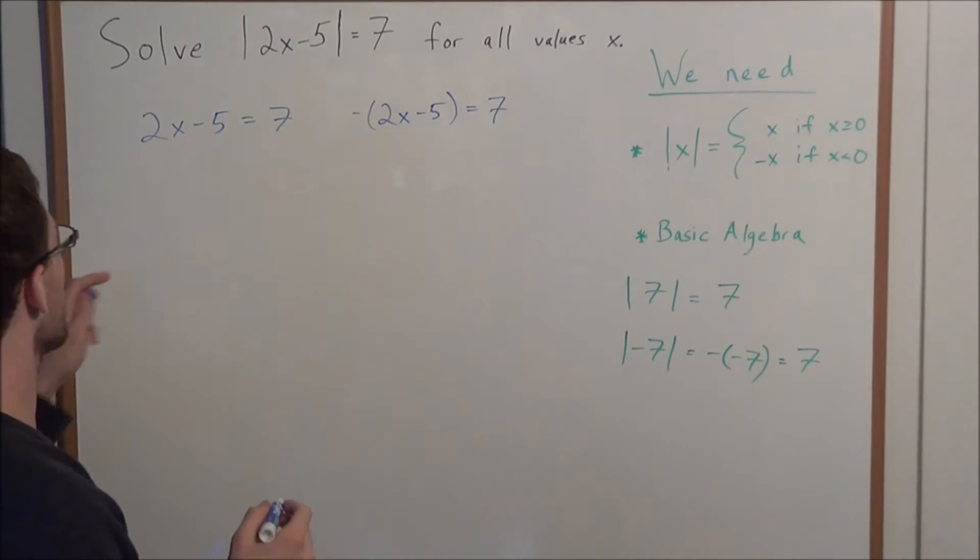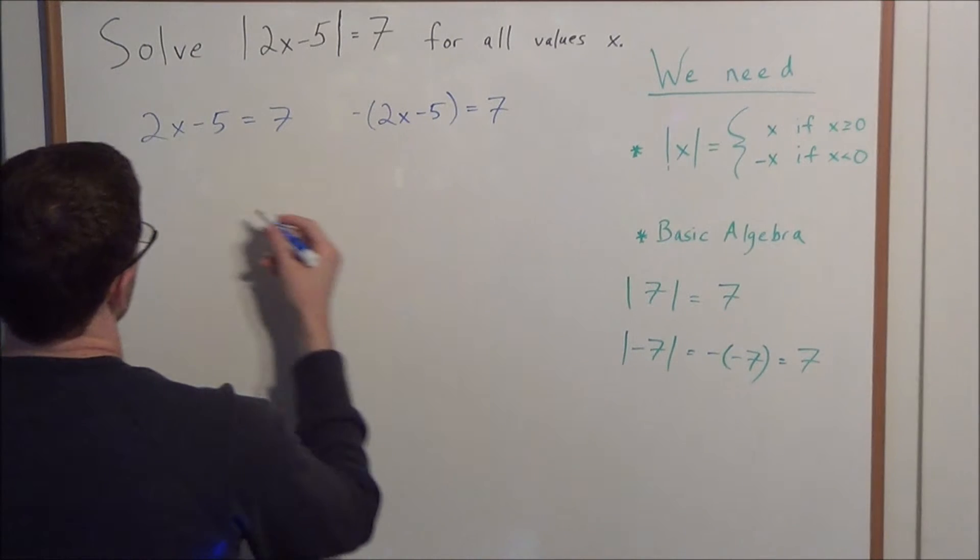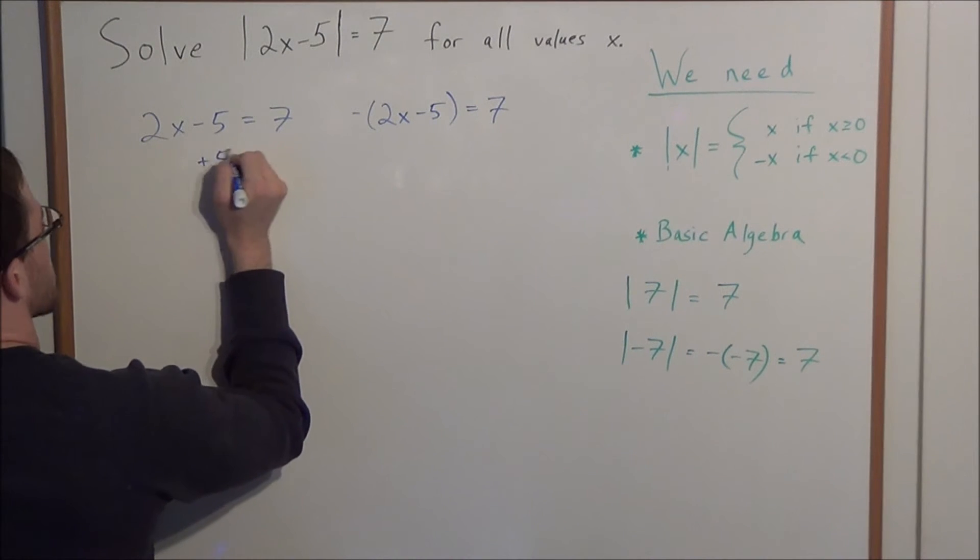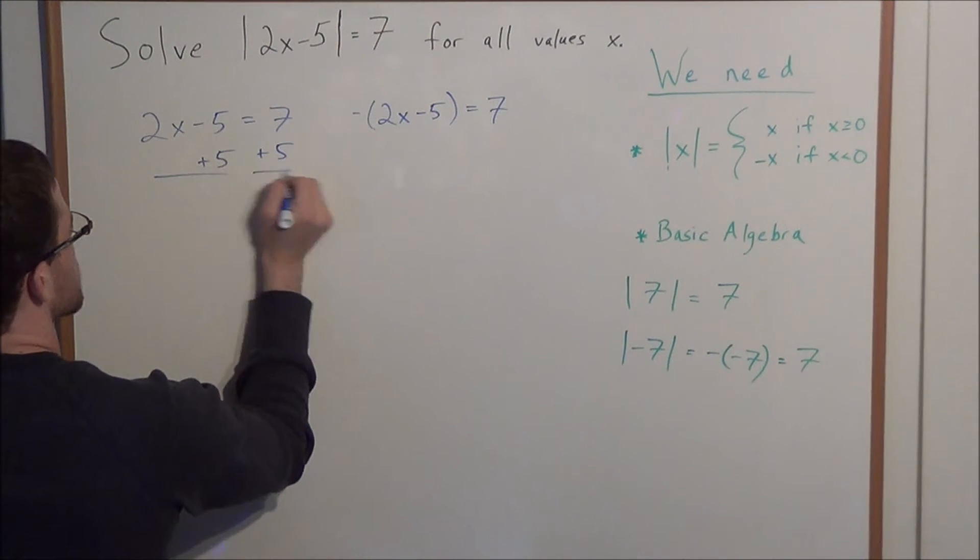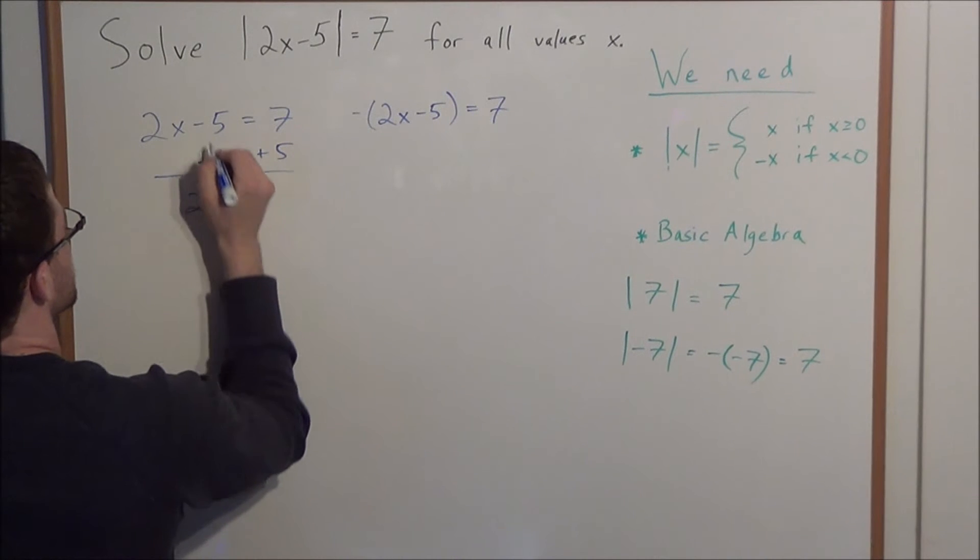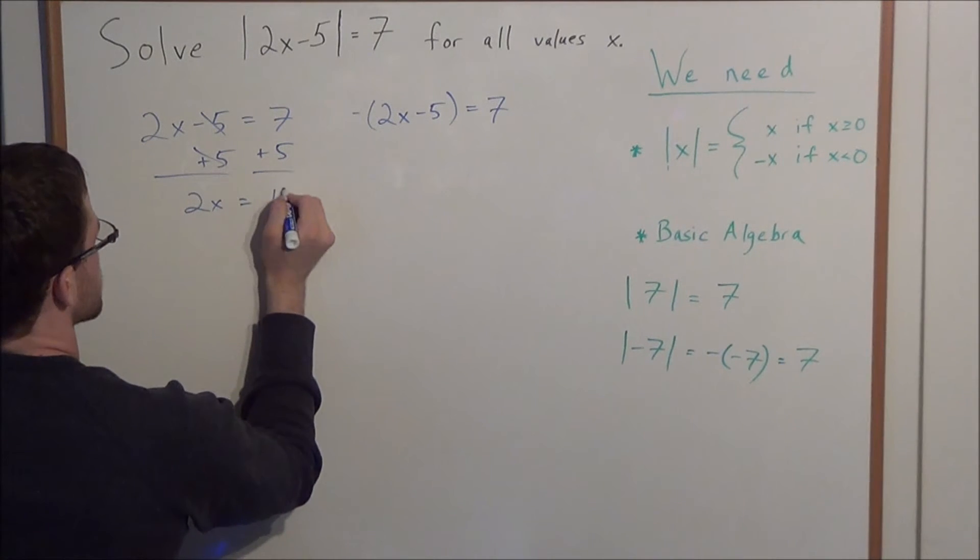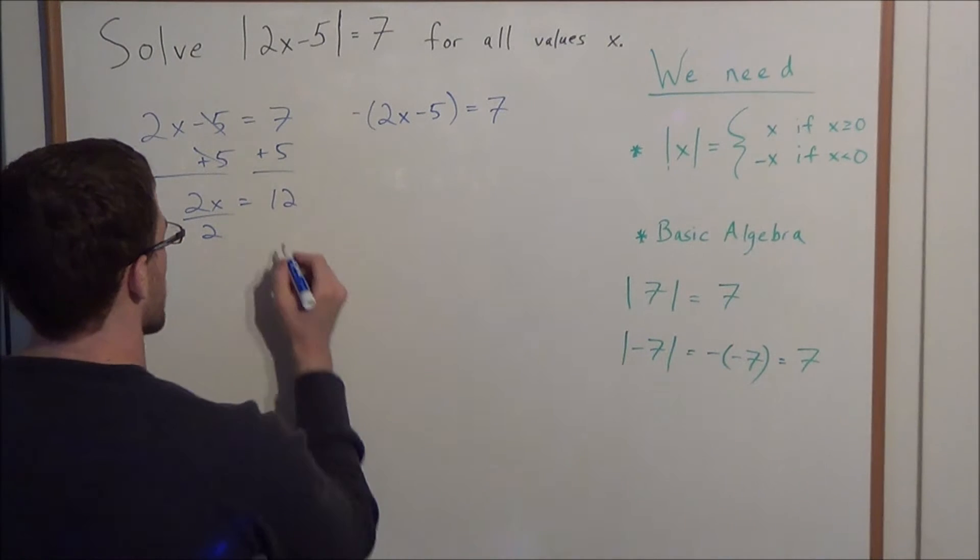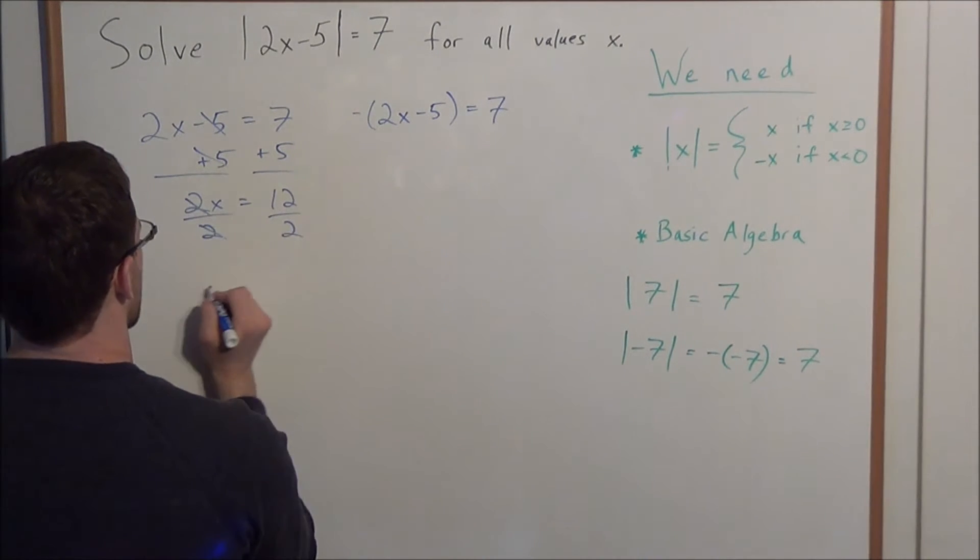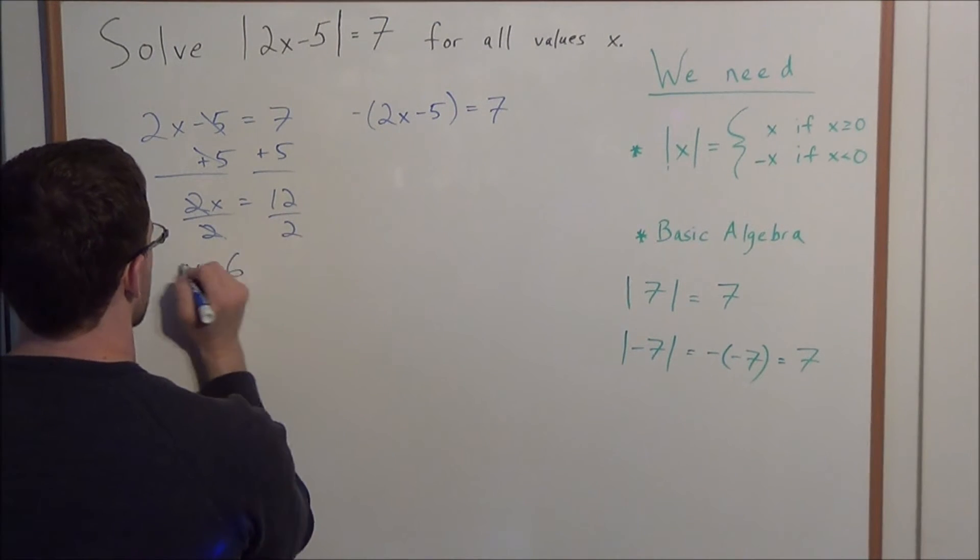So now when we solve these equations, this is where the basic algebra is going to come in. What we do is we add 5 to both sides. For this first equation, we have 2x is equal to positive 12. To solve for x now, we just have to divide by 2, and we have x equals a positive 6.